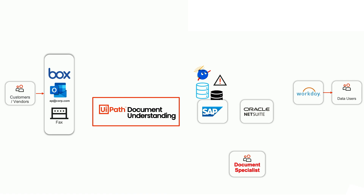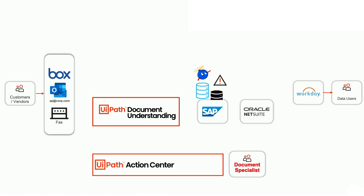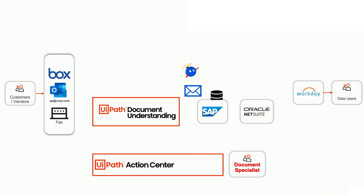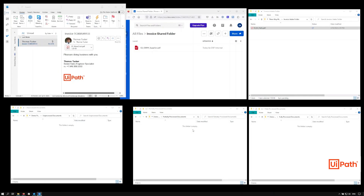Should an invoice fail either validation against the purchase order or validation against the goods receipt, a follow-up task will be created in Action Center to allow an agent to determine the appropriate action — typically sending an email back to the vendor. To begin, we see three locations from which the robot will ingest data: an Outlook inbox, a Box cloud storage location, and a shared network folder.